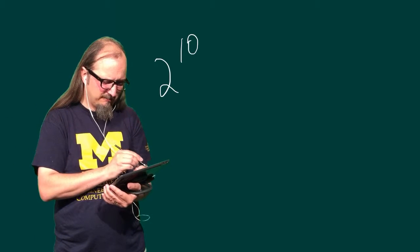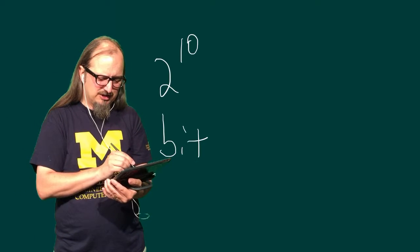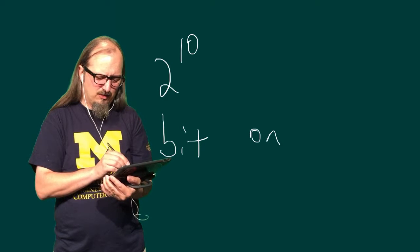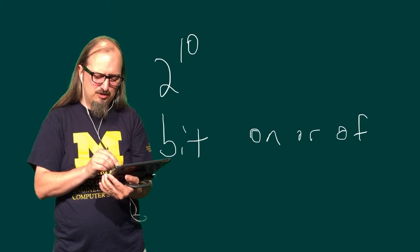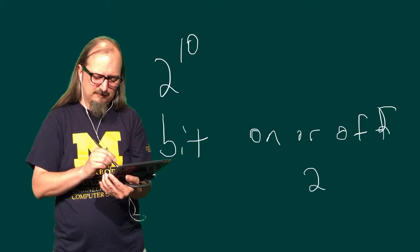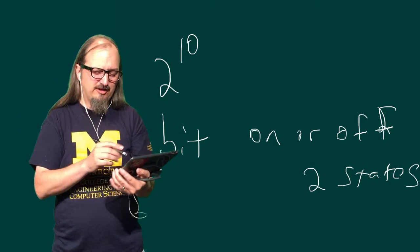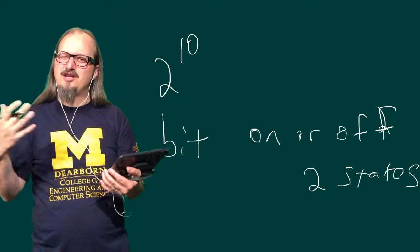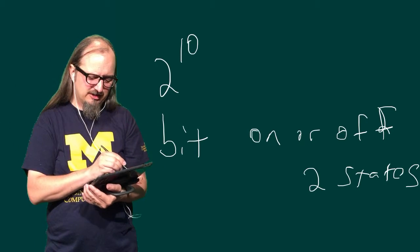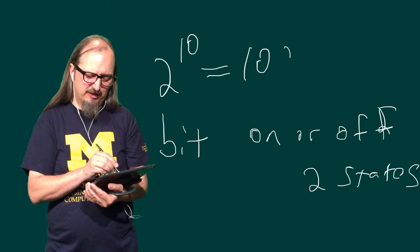And again, that all comes back to what a bit is, which is an on or off—two states. And since everything comes back to two states, everything is referenced to 2 raised to some power. And 2 raised to the 10th power is 1,024.